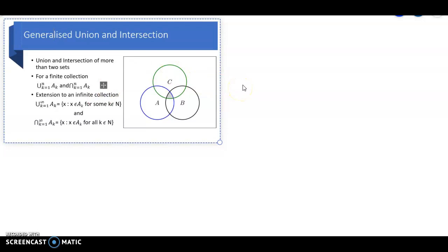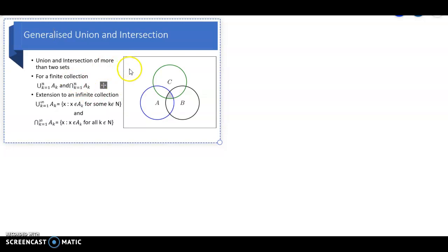Similarly, the union of a given collection of sets is the collection of all points which are in either of the given sets. If the number of given sets is finite — suppose we are given ten sets, a hundred sets, a thousand sets, etc. — and we denote that number by N, then the union can be denoted by the symbol: union k equal to 1 to N of A-sub-k.